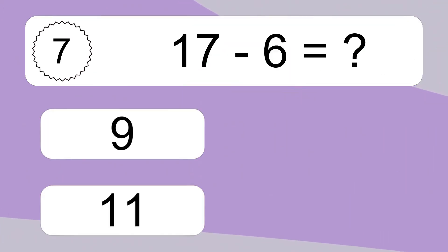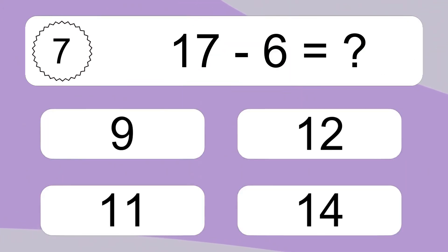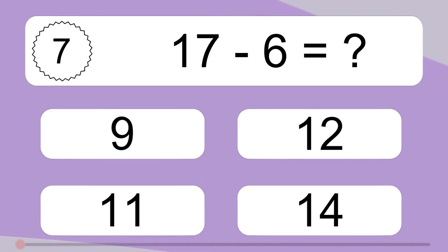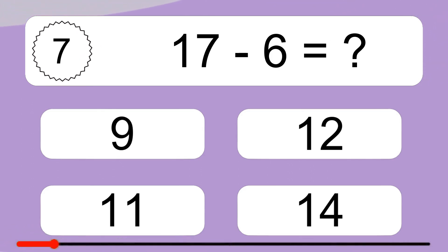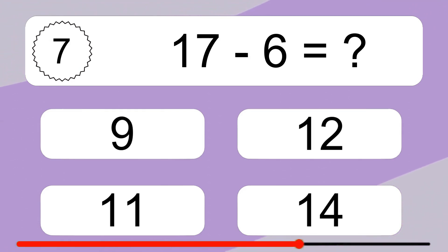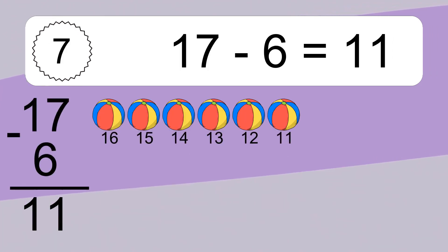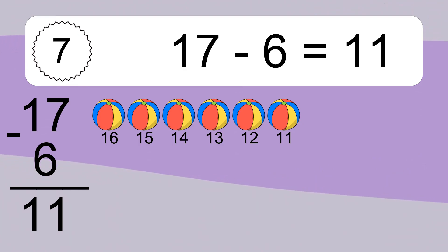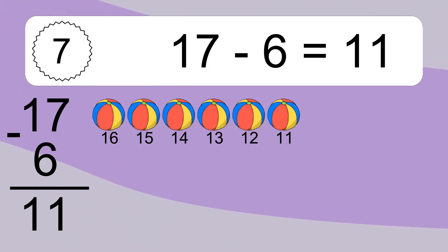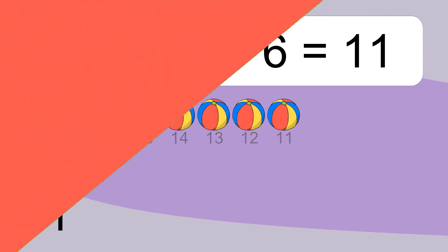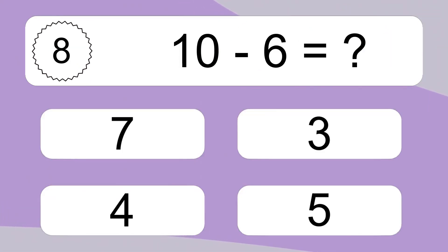17 minus 6 equals what? 17 minus 6 equals 11. Let's count it: 16, 15, 14, 13, 12, 11.